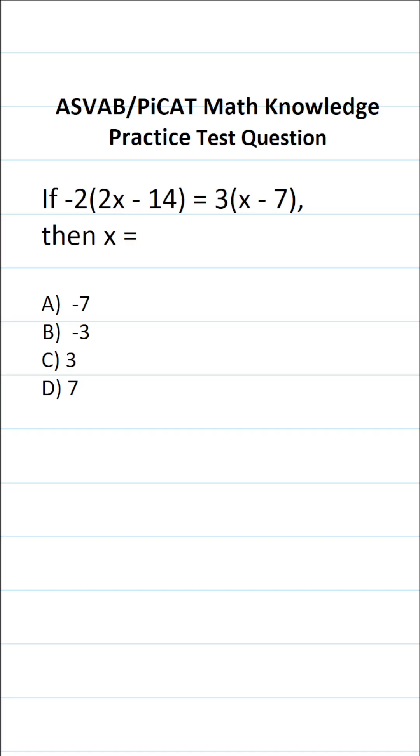This math knowledge practice test question for the ASVAB and PiCAT says if -2 times 2x minus 14 equals 3 times x minus 7, then x equals. So in this case we're going to be solving this equation for x.